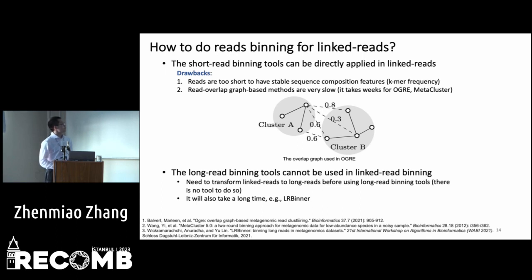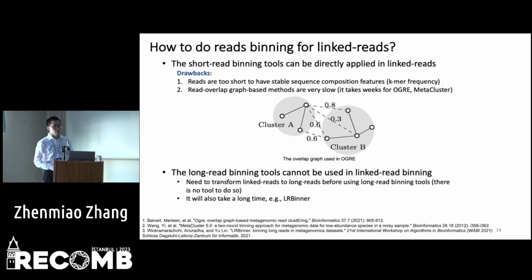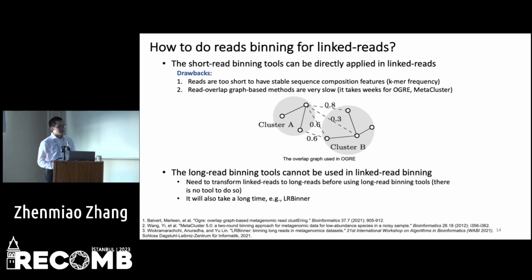Existing short-read binners check the overlap between each pair of reads and build huge overlap graphs. These read-overlap-graph-based methods are very slow because the graphs have a large number of nodes and edges. We tested existing short-read binning tools on our metagenomic dataset and found it would take weeks to finish. We also considered long-read binning tools, but they also cannot be used directly for linked-read binning.